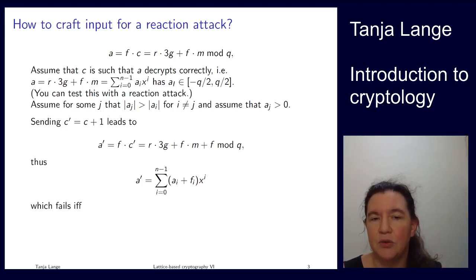Another way, that the new a prime is computed, well Bob will just take his secret polynomial f, multiply the incoming ciphertext by it, and then gets this expression. Now c prime is larger by one than c, and since it got multiplied by f, we're getting that a prime is the same as a plus f.